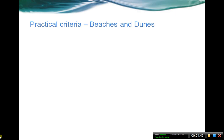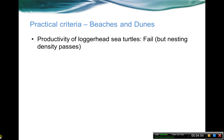So how well did the beaches and dunes indicators do on the practical criteria? Basically: can we model them with existing information? First off, productivity of loggerhead sea turtles — this was to try to capture the nest predator community and how well beach nesting species might do. Surprisingly, getting the productivity in a consistent way across the whole geography was a little harder than we thought. We failed to get consistent productivity of sea turtles across the whole range. But with a slight tweak, looking at number of nests, that actually passes. We managed to get number of nests across the whole geography, and those correlate very strongly with overall productivity.